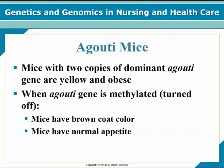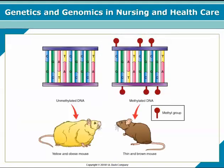The agouti mice are mice with two copies of the dominant agouti gene. Those mice are yellow and obese. When the agouti gene is methylated — turned off — the mice have a brown coat color and a normal appetite and are not obese. This illustrates the direct impact of methylation on phenotype.